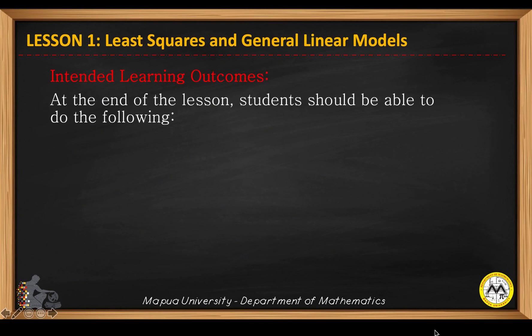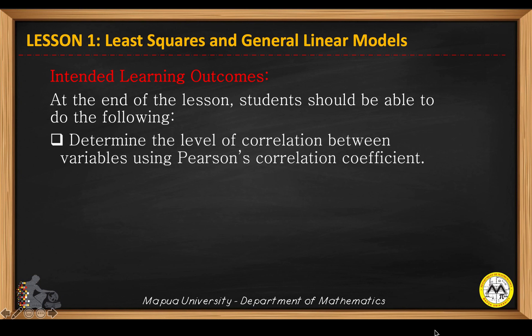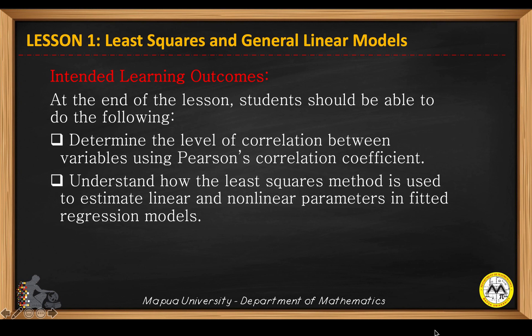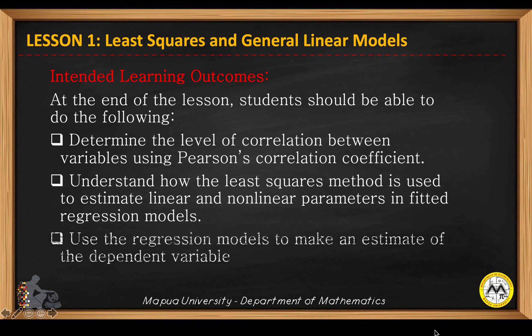At the end of the lesson, students should be able to do the following: determine the level of correlation between variables using Pearson's correlation coefficient; understand how the least squares method is used to estimate linear and non-linear parameters in fitted regression models; and use the regression models to make an estimate of the dependent variable.